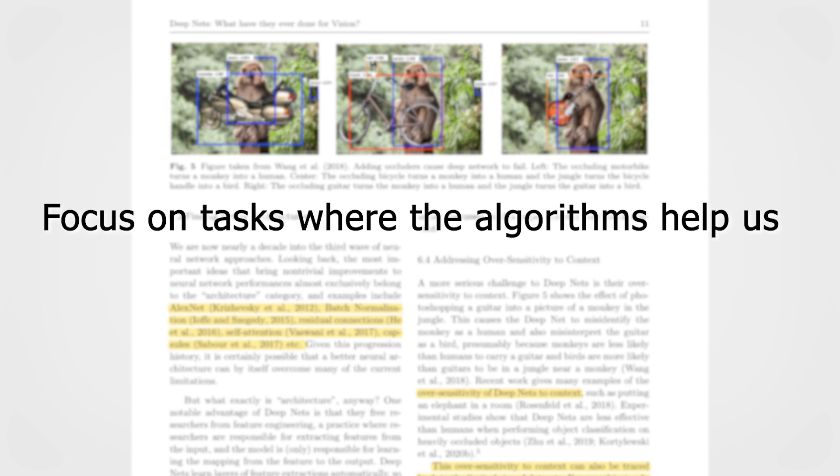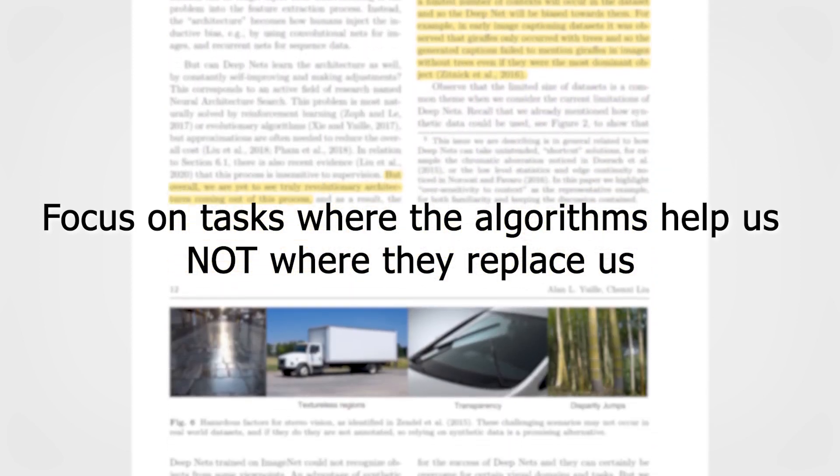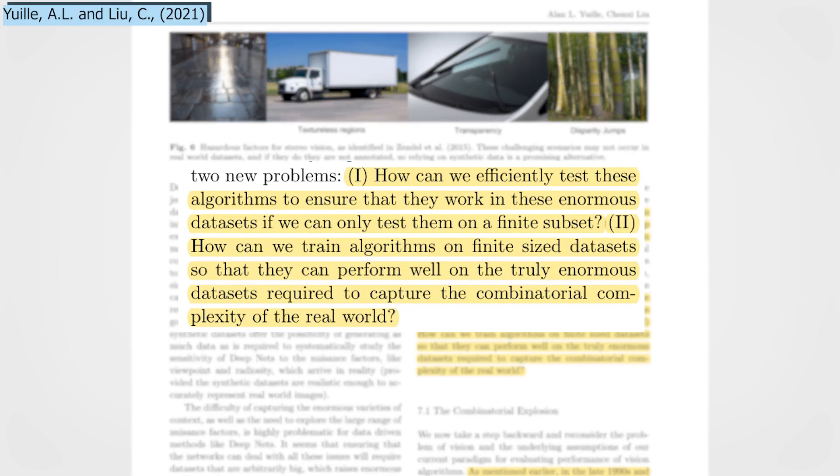This is why, I argue, that we must focus on the task where the algorithms help us, and not where they replace us, as long as they are that dependent on data. This brings us to the two questions they highlight. How can we efficiently test these algorithms to ensure that they work on these enormous datasets, if we can only test them on a finite subset? And two, how can we train algorithms on finite-sized datasets, so that they can perform well on the truly enormous datasets required to capture the combinatorial complexity of the real world?